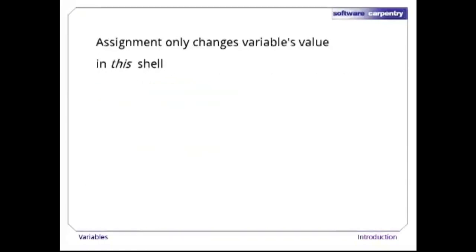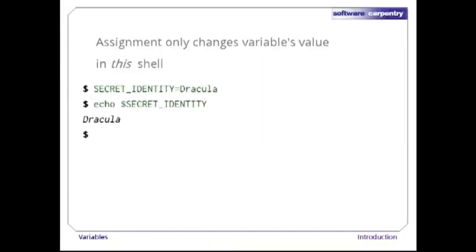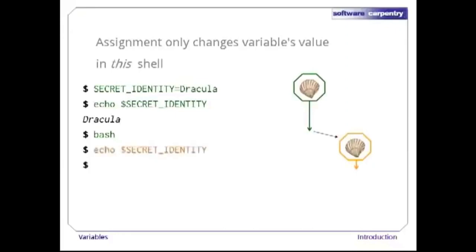It's important to note, though, that assignment only changes a variable's value in the current shell, not in any other shells that are currently running or in any shells that are started later. Let's go back and set our secret identity once again. Once it's set, let's run a fresh copy of the shell by typing 'bash'. We now have two copies of the shell running: the original and its child. If we echo $secretidentity in the child shell, nothing is printed because the variable doesn't have a value.